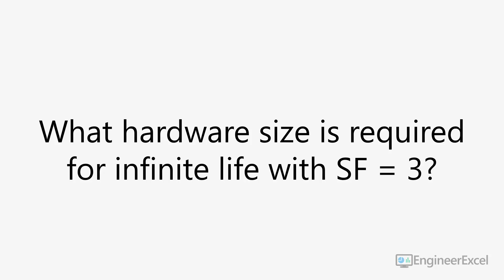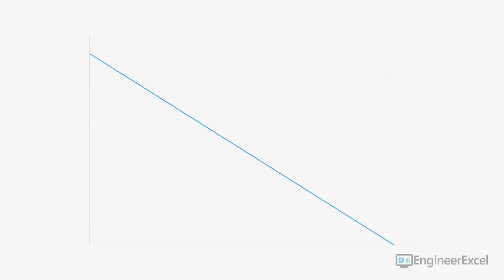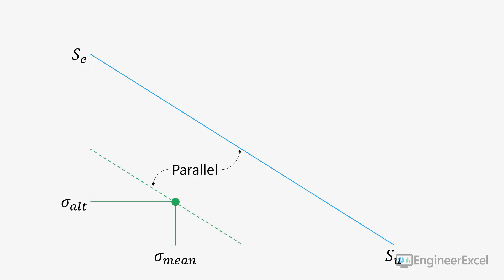Since this is a fatigue problem, we'll solve it using the Goodman line, which is defined by the endurance strength and ultimate tensile strength of the bolt material. In order for a design to meet the infinite life requirement, the operating point — which is defined by the mean stress and the alternating stress — will have to be at or below this line, which runs parallel to the Goodman line and crosses the y-axis at the equivalent stress, which is equal to the endurance strength divided by the factor of safety.